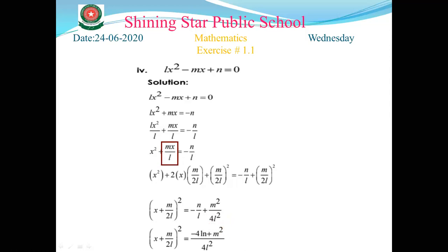When taking LCM on the right-hand side, 4l² is the denominator. The numerator: 4l cancels and we multiply by n, giving -4ln. With m² in the numerator, the right side is (m² - 4ln)/4l².